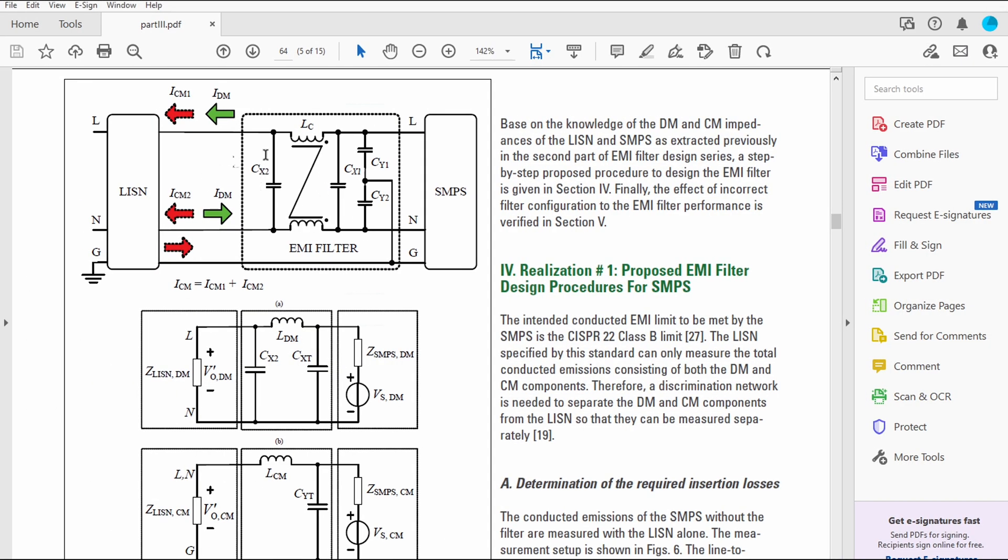So now that we know that, let's take a look at the EMI filter and find out what parts are responsible for what. On this picture here, the X capacitors are filtering out differential mode noise because they are filtering from one line to another line. So if there is a noise on L and there is no noise on N, the capacitor will filter it out.